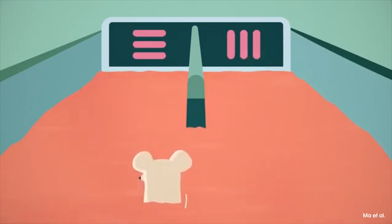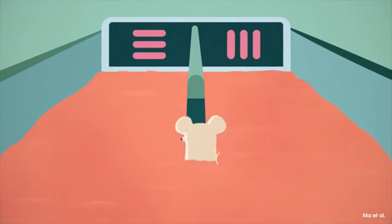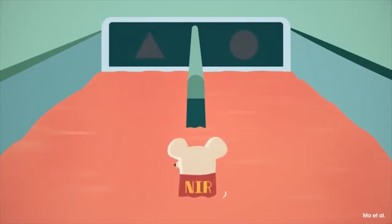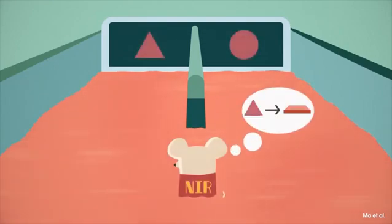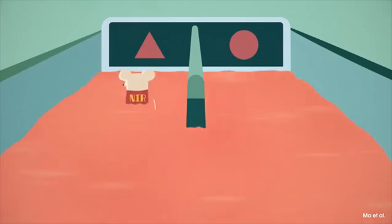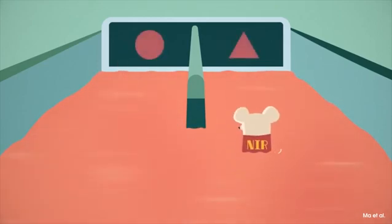For the non-injected mice, as they couldn't see the near-infrared light patterns, they just randomly swam in the maze, hoping their luck would get them somewhere. When the scientists changed the near-infrared light patterns from vertical and horizontal gratings to other patterns, such as a triangle and circle, they discovered the same results.